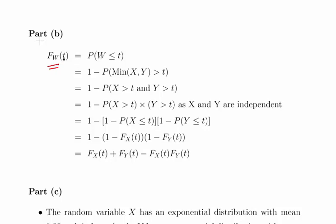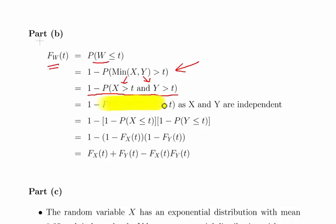F_W(t) is the cumulative distribution function of W, which means the probability of W less than or equal to t. This is the complement of the minimum being greater than t. The minimum of X and Y being greater than t means both X greater than t and Y greater than t. So we have one minus the probability of X greater than t and Y greater than t. Since these are independent events, that becomes one minus the probability of X greater than t times the probability of Y greater than t.